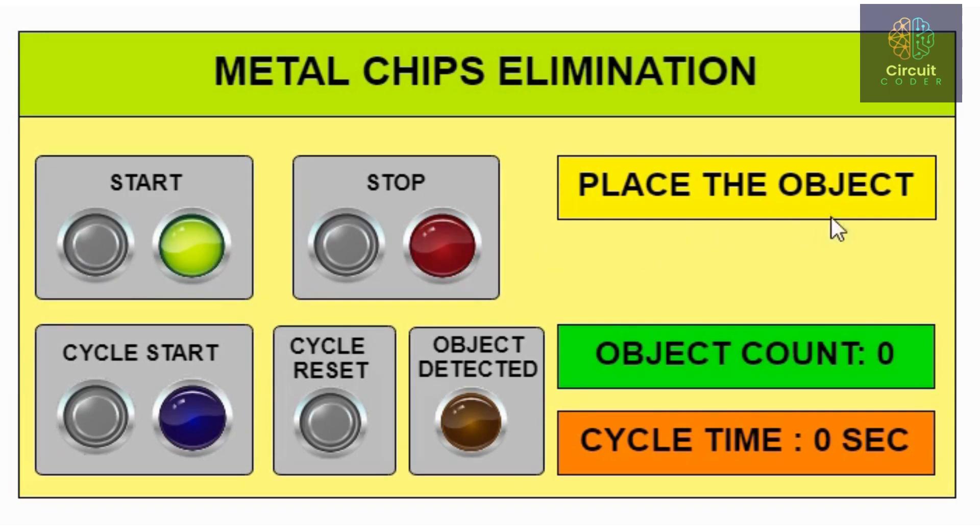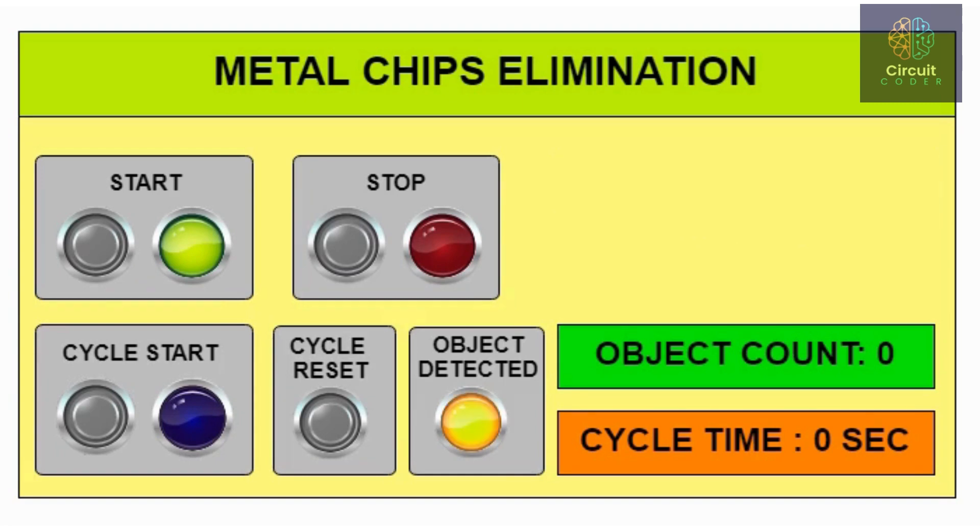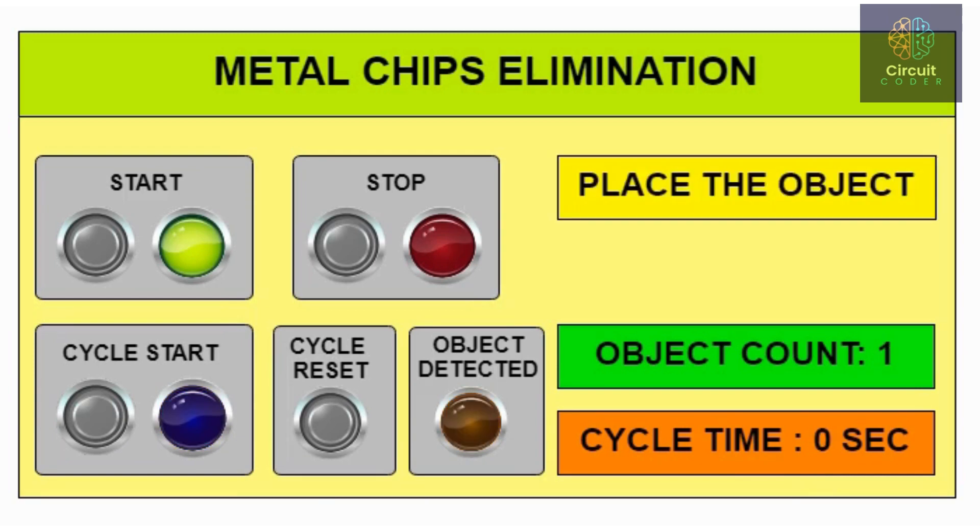I will now place the object and the object detected indicator will glow. Let's start the cycle now. The cycle time will start, which is set to 5 seconds. Object count will increment. After the punching operation has been completed, the operator will have to remove the object and place another one.